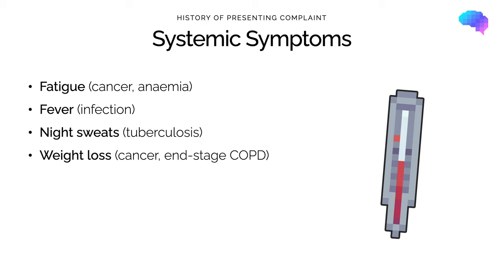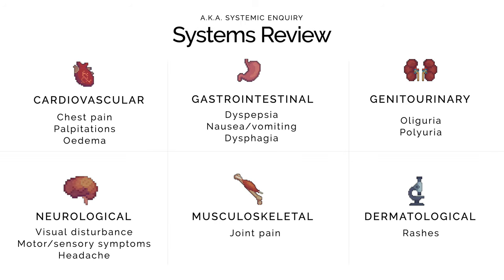Our last set of symptoms are systemic symptoms, including fatigue, fever, night sweats, and weight loss. The presence of these is suggestive of a more serious underlying disease process — for example, an underlying cancer causing fatigue and weight loss. The last step is to perform a systems review, also called a systemic inquiry, which involves asking about symptoms in other body systems and may identify symptoms the patient has forgotten to mention.